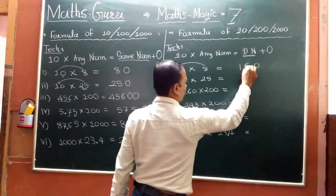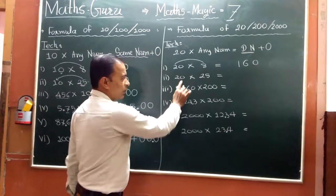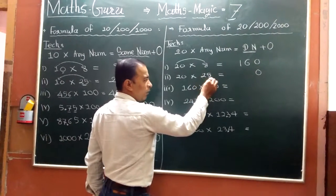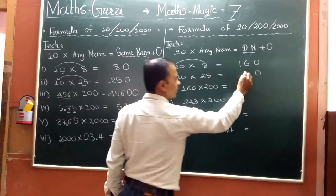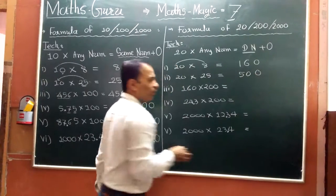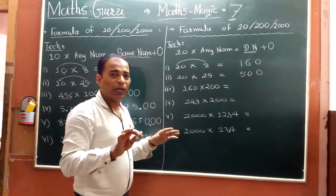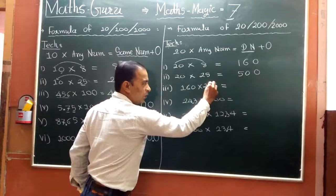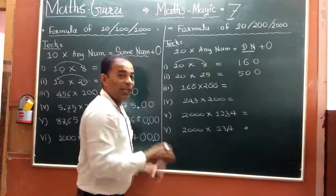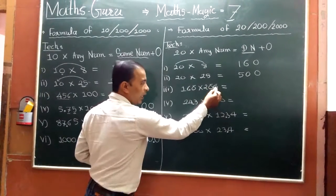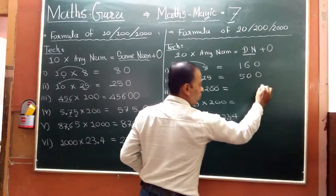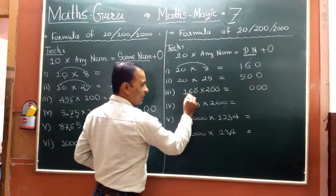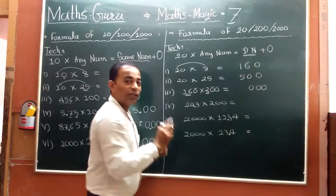20 into 8 is 160. Number number, how many zeros? 1. 10 into 5, 10 into 5, 50. So super. How many zeros? 1, 2 and 3. How many zeros? 1, 2 and 3. 1, 2 and 3, 60, 2, 42.